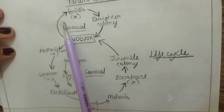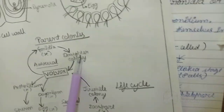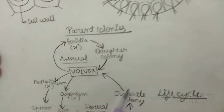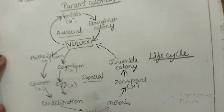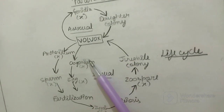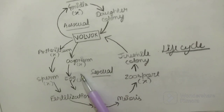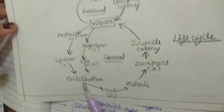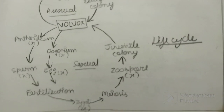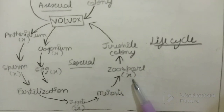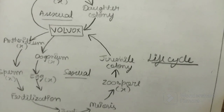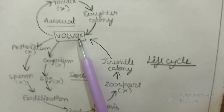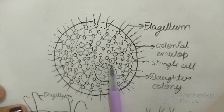Here is the life cycle of Volvox. For asexual reproduction, haploid gonidia are formed, which further divide through various stages as shown in the diagram, resulting in the formation of a young daughter colony which forms the complete Volvox. For sexual reproduction, which is oogamous type, we have the antheridium and oogonium, both haploid, forming haploid sperm and egg. Fertilization takes place, a diploid zygote is formed, it undergoes meiosis, and zoospores are formed, ultimately leading to a complete mature Volvox colony. Our next topic will be Chlorella.